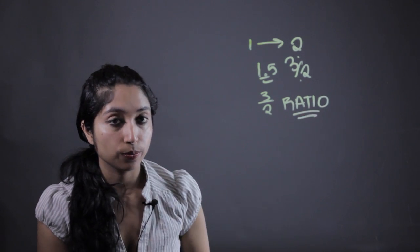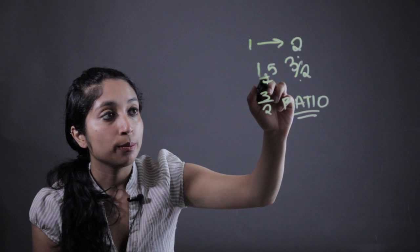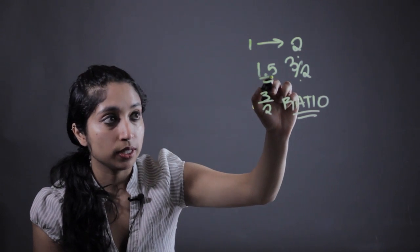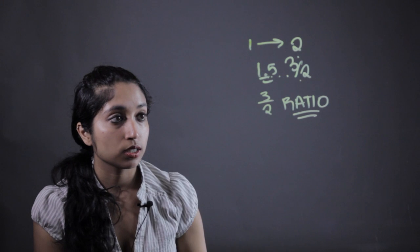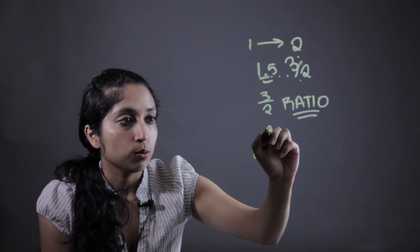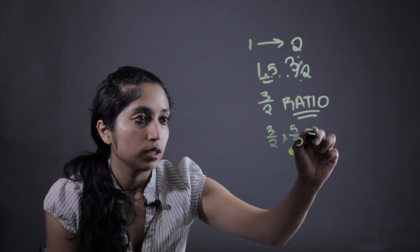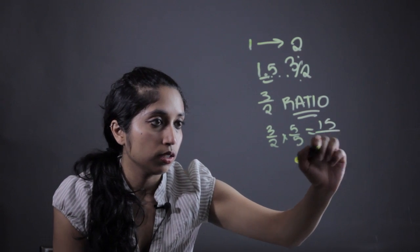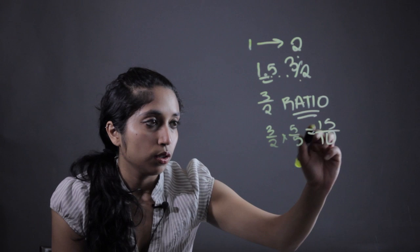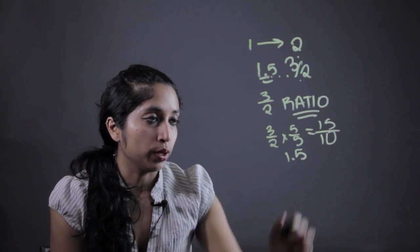Now with a decimal, decimals are written based on a system of tens, with this being the tens, hundreds, thousands. So in this case, we want to change it into a system of tens. It's going to give us 15 over 10. It's written as 1.5.